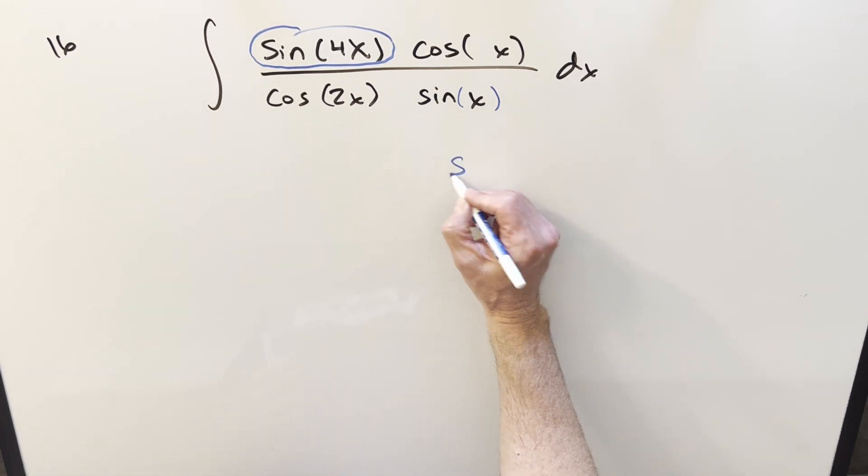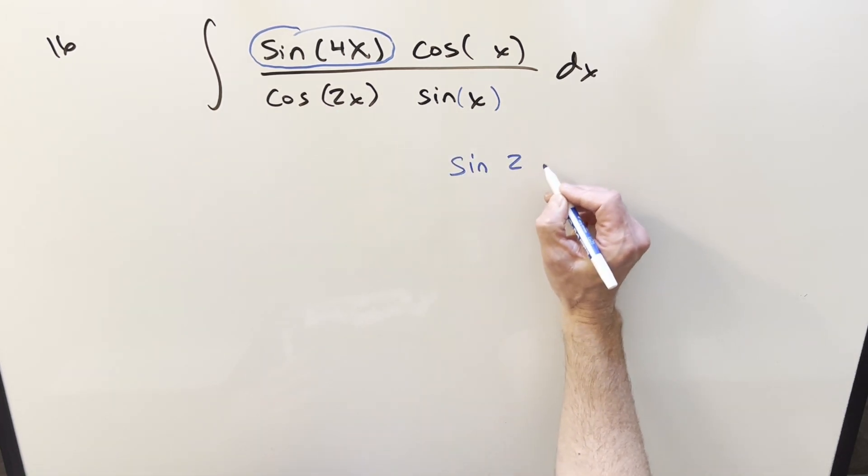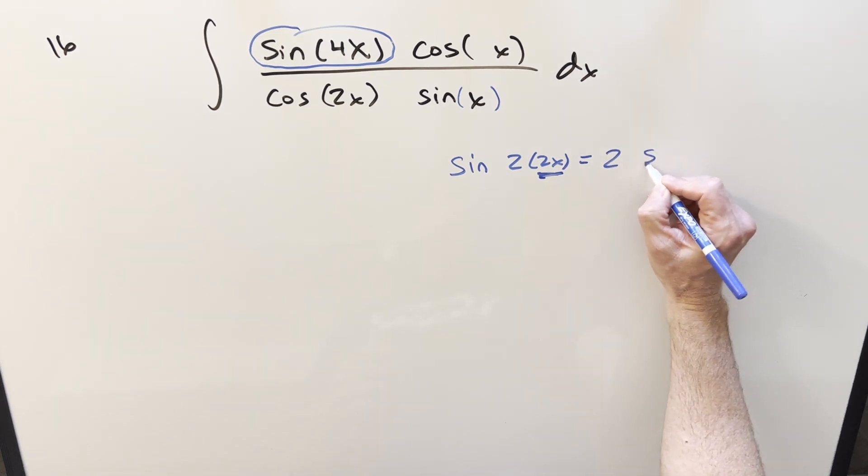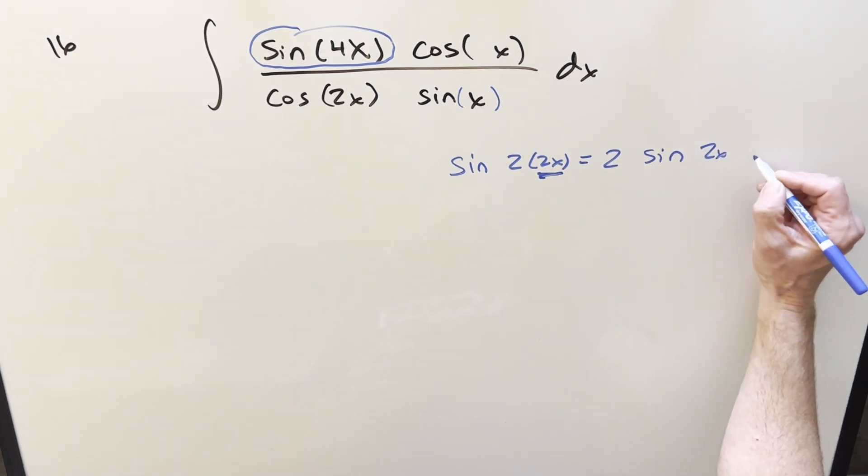So for sine 4x, I can write it as sine times 2, 2x. That way I can use the double angle formula where this is going to be our input and write this as 2 sine 2x cos 2x.